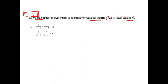Looking at this equation, notice the denominator. You have x minus 1 in this equation and also x minus 1 in the second equation. Similarly, on the other side, you have y minus 2 and y minus 2. So I am assuming that 1 by x minus 1 equals A, and 1 by y minus 2 equals B.